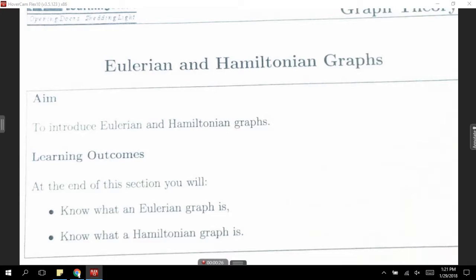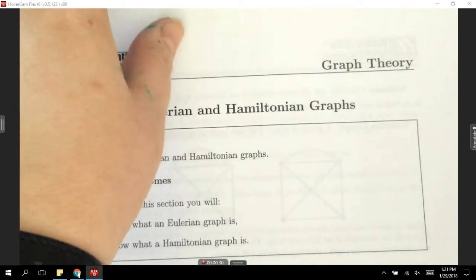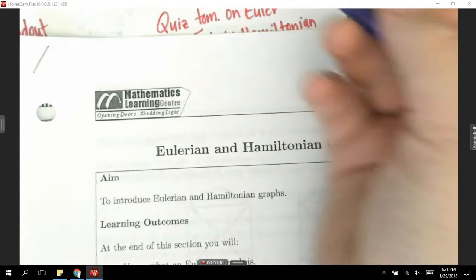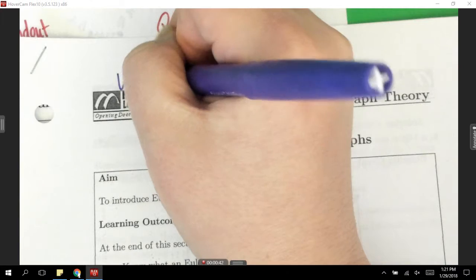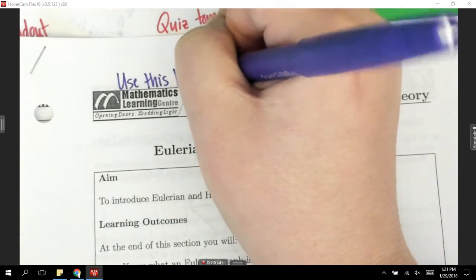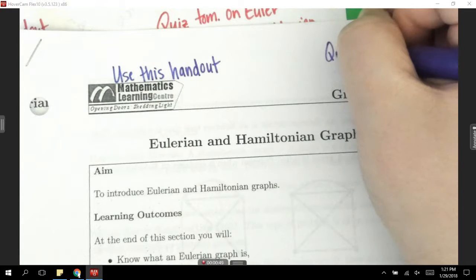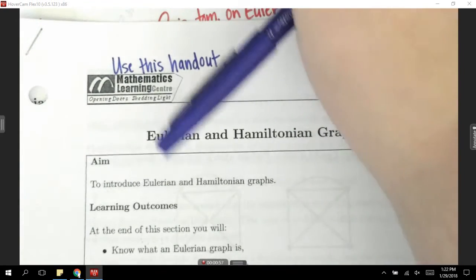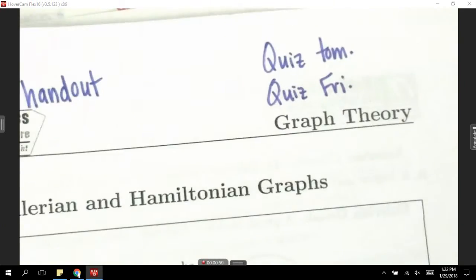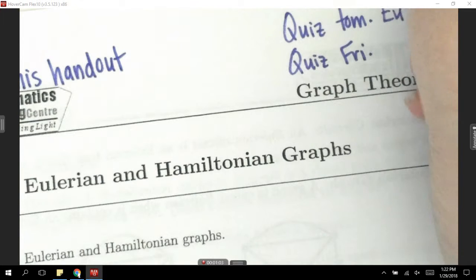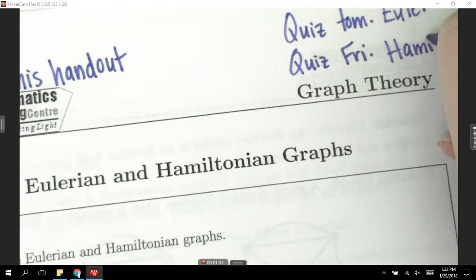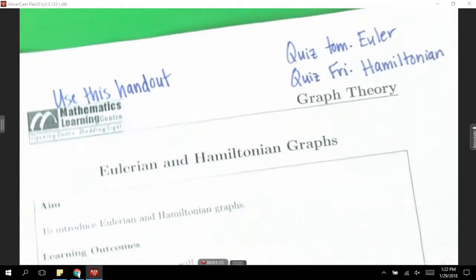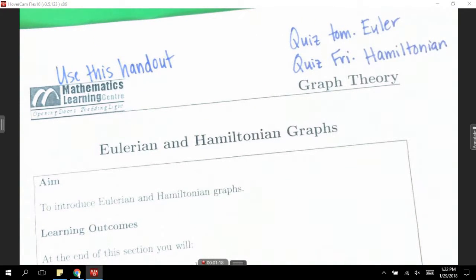There's good news and bad news. The good news is that we're talking about something other than Euler circuits and paths today. The bad news is they're called Hamiltonian circuits and paths and they're a little bit different. The even better news is that you need this handout. You have a quiz tomorrow and you have a quiz on Friday. Why do you have two different quizzes? Because I'm trying to make your life a little bit easier. Tomorrow's quiz is only Euler. Friday's quiz is only Hamiltonian. I don't want people to get them confused, hence why there's two quizzes.